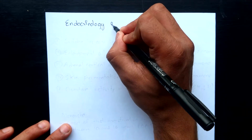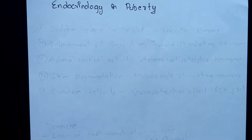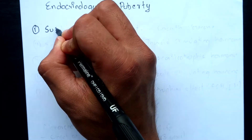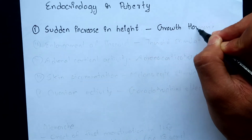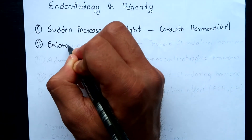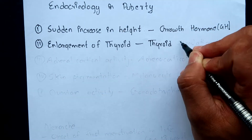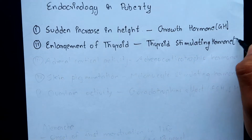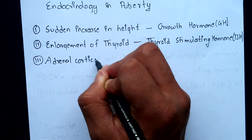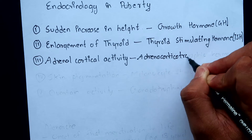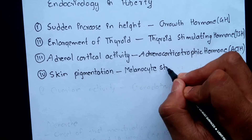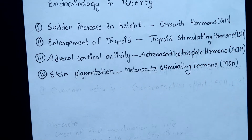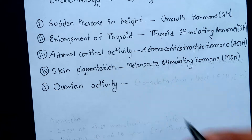Now let's look at some of the changes that occur due to hormones during puberty. There is a sudden spurt in height just before or after menarche due to growth hormone produced by the anterior pituitary. Enlargement of the thyroid gland due to thyroid stimulating hormone. Increased adrenal cortical activity due to adrenocorticotrophic hormone. Skin pigmentation due to melanocyte stimulating hormone. And the onset of ovarian activity due to gonadotrophic hormone.